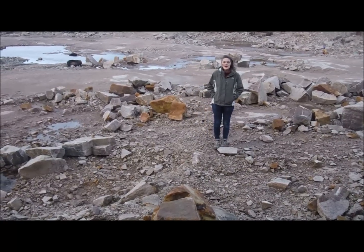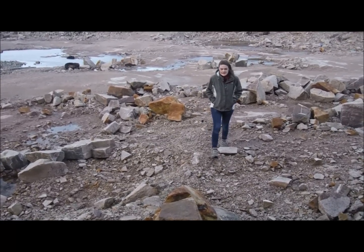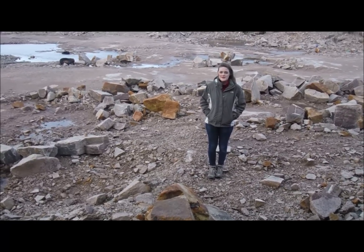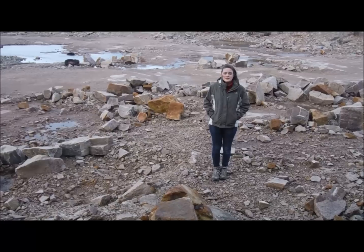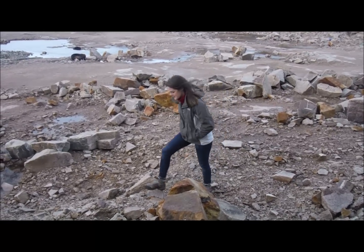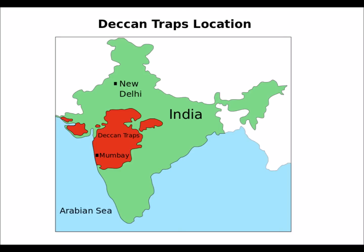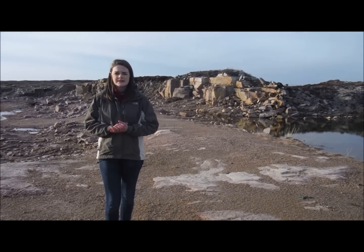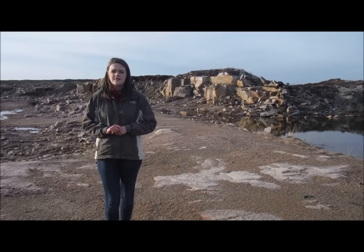Volcanism is the second most supported hypothesis for the KT mass extinction. In 1979, Dewey McLean began linking the global mass extinction at the KT boundary with the Deccan Traps mantle plume flood basalt eruptions in India, creating the Deccan Traps volcanism theory. These lava flows came about when India moved over a hot spot in the Indian Ocean. Enormous quantities of basaltic lava flooded out over what is now the Deccan Plateau of western India, and are now over two kilometers thick in places. Although the peak eruptions only lasted several hundred thousand years, this short time straddled the KT boundary, dating the Deccan Traps to around 65 million years ago.